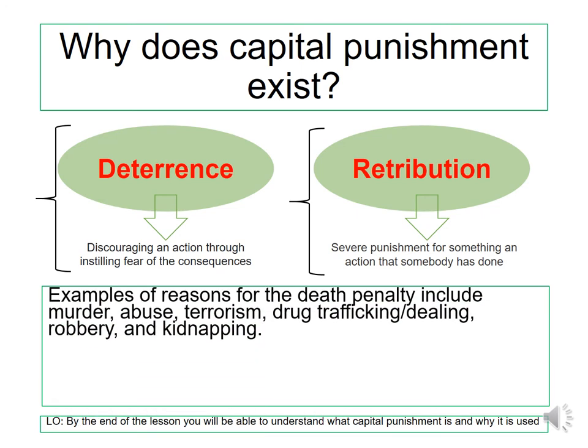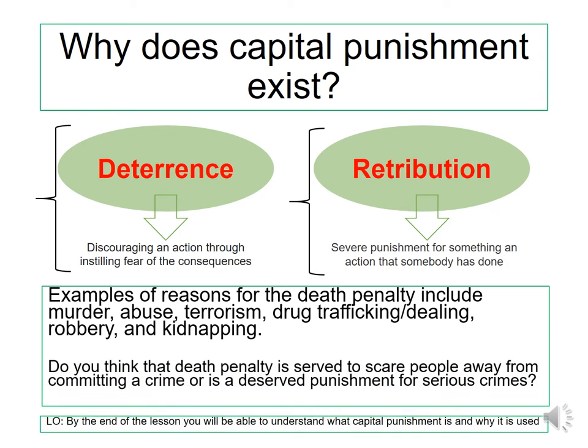Examples of reasons for the death penalty include murder, abuse, terrorism, drug trafficking, drug dealing, robbery and kidnapping. Think about whether the death penalty is served to scare people away from committing a crime, or whether it is a deserved punishment for a serious crime.